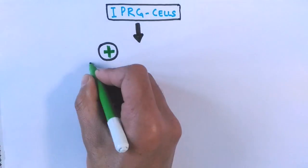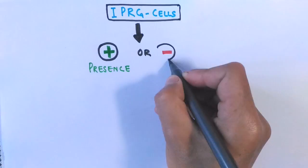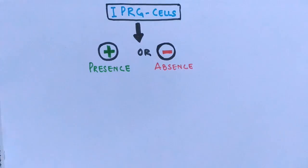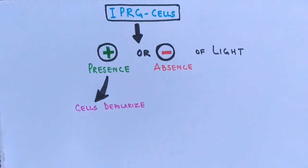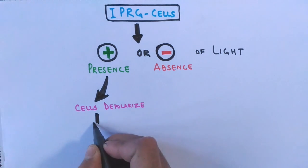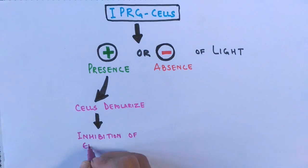Now let's see the interaction of ipRGCs with light. There are two scenarios: presence of light and absence of light. Under conditions of light, retinal ganglion cells depolarize — unlike rod and cone cells, which repolarize in the presence of light. When these ipRGCs depolarize, something important happens.